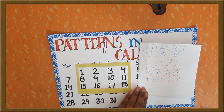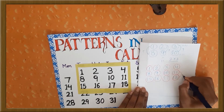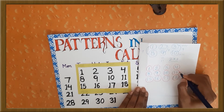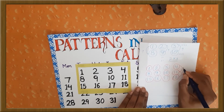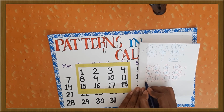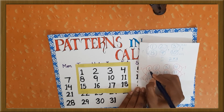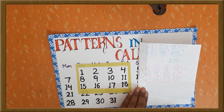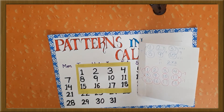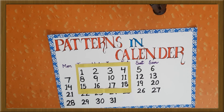Now see one more pattern. 18 minus 7 is 11. 11 minus 7 is 4. 15 minus 7 is 8. And 8 minus 7 is 1. So these were the patterns that we could see in the magic rectangle.